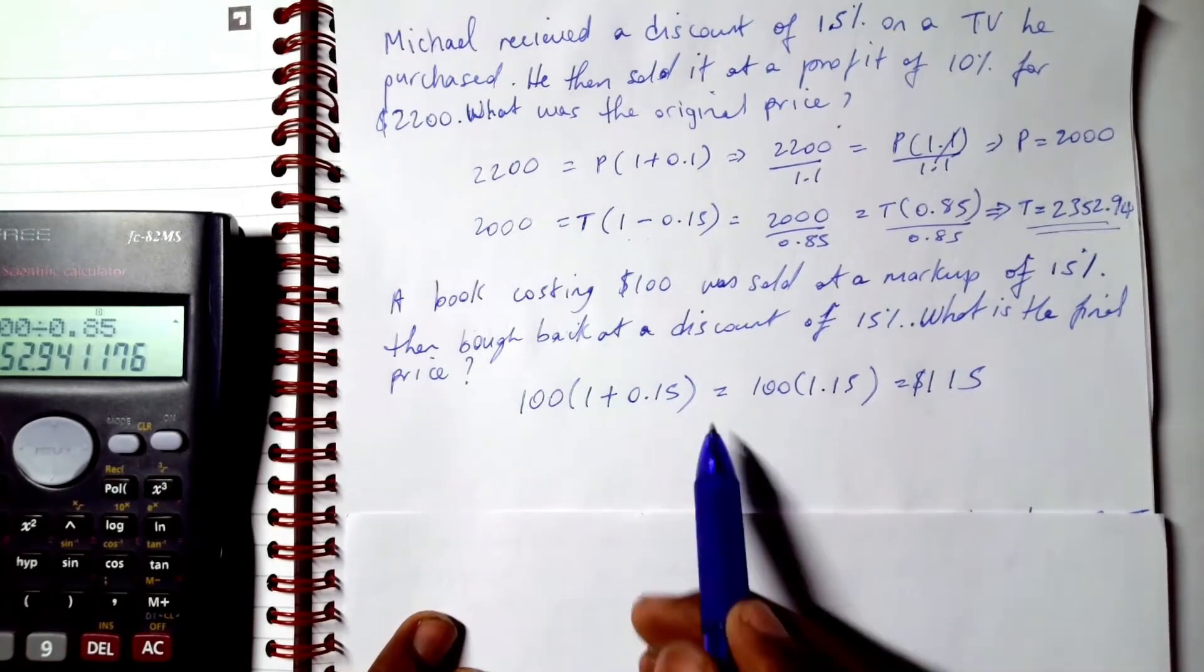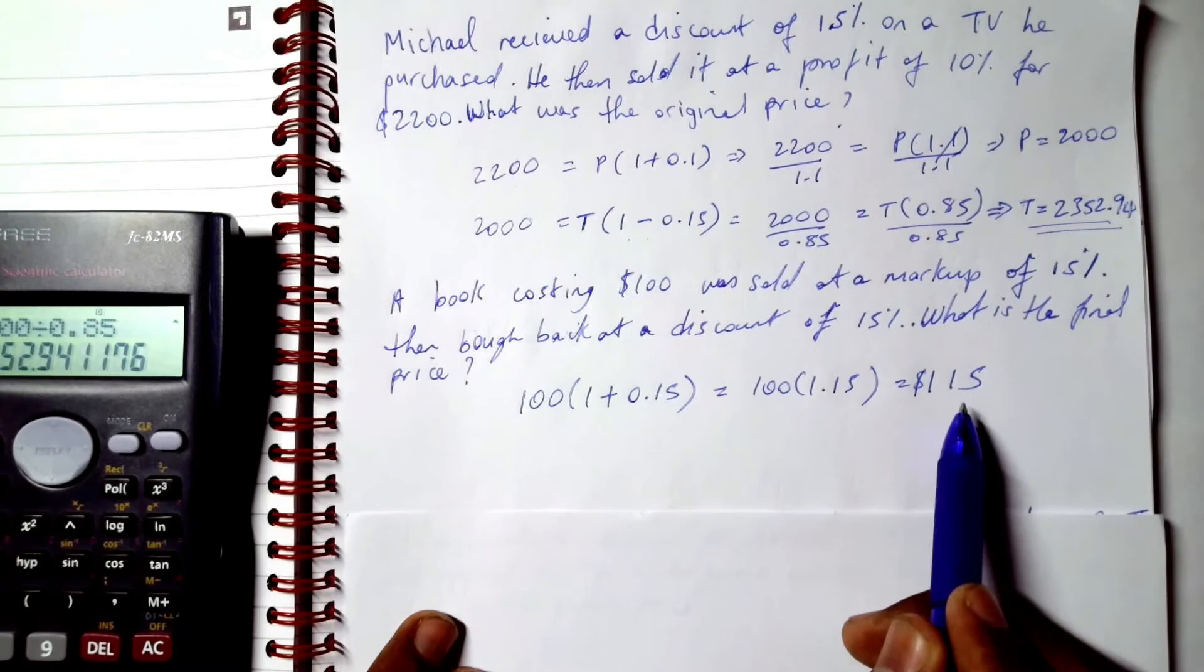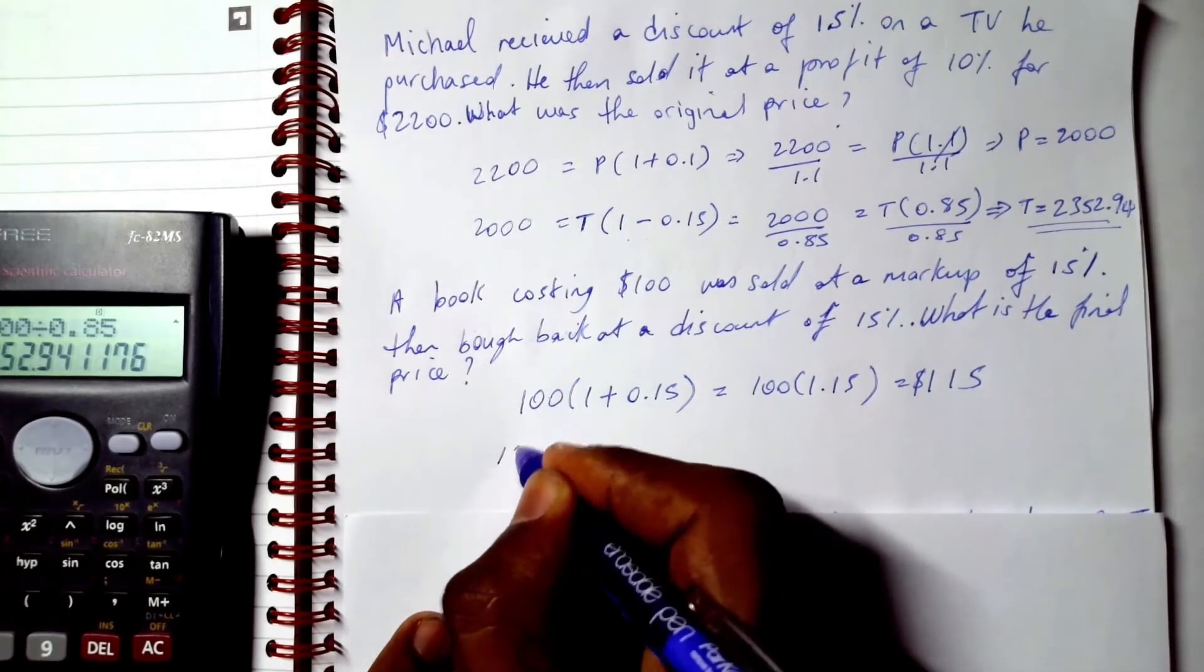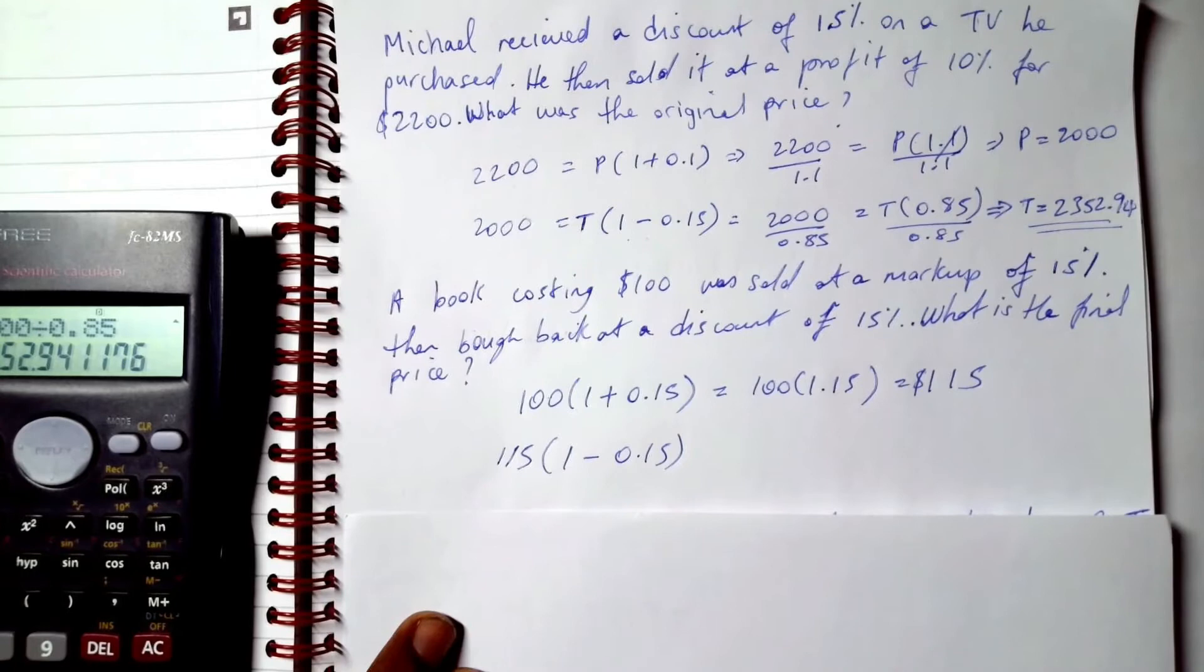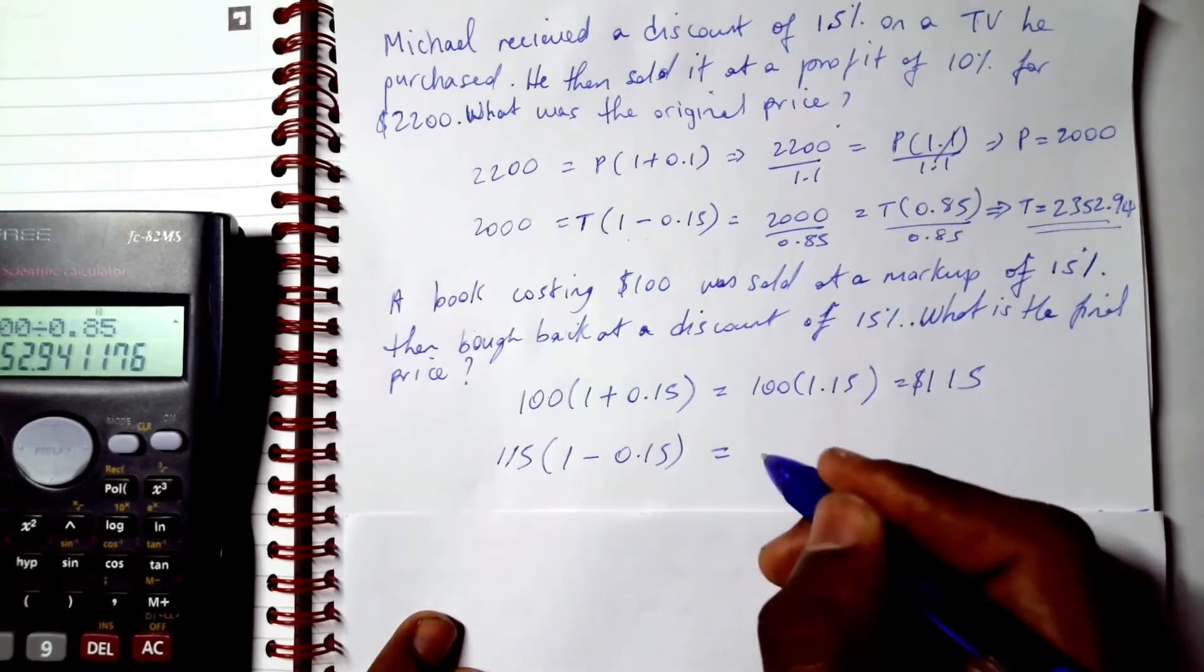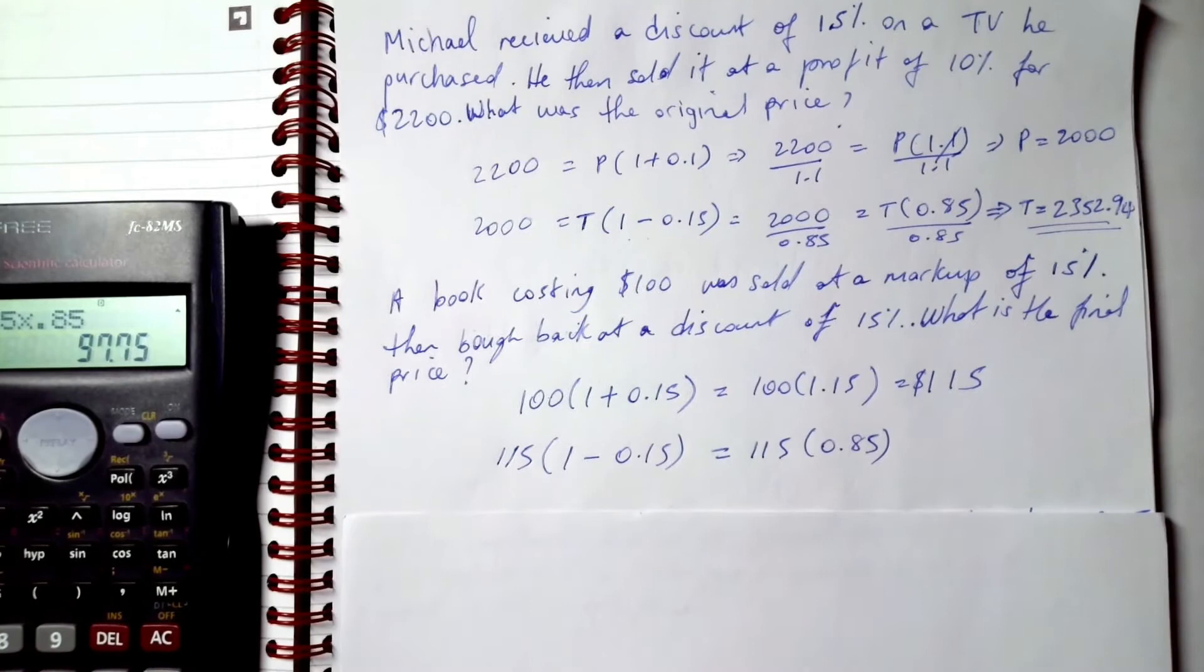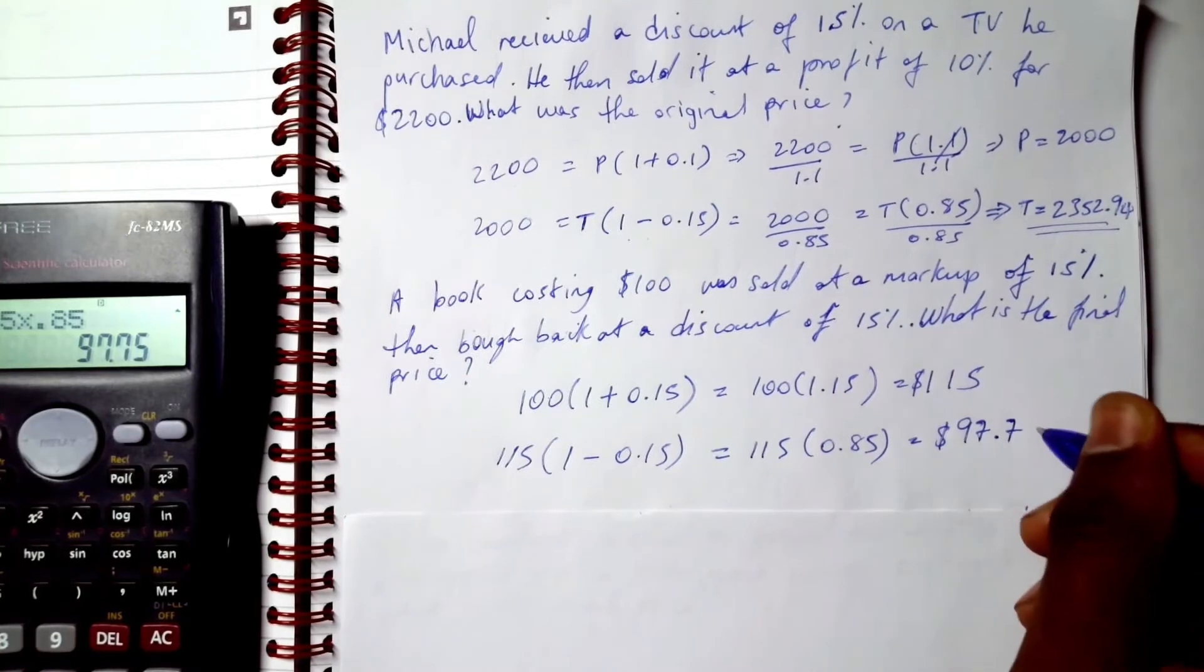So I sold my book for $115 and then I bought it back. However, I received a discount of 15%. So it's going to be 115 × 0.85. Do the multiplication, which is equal to $97.75.